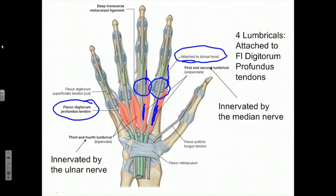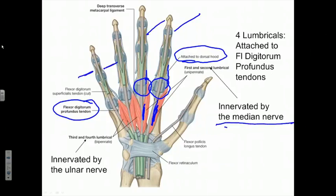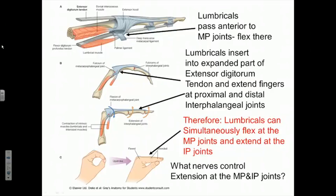Note how the lumbricals get their innervation — they share it. Two of the lumbricals serving the index and middle fingers are innervated by branches of the median nerve. Two of the lumbricals acting on the ring and pinky are innervated by the ulnar nerve.